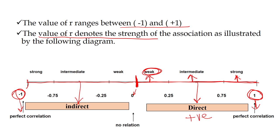The same applies to the left side. If the value ranges from 0.0 to minus 0.75 it is called intermediate or moderate negative, or moderate inverse correlation. If the value ranges from minus 0.75 to minus 1 it is called strong indirect, strong inverse, or strong negative correlation. If the coefficient of correlation is exactly 0, then it is called no correlation.